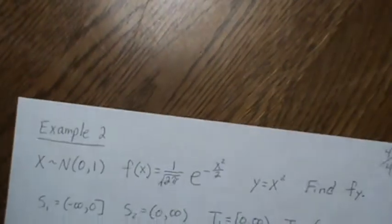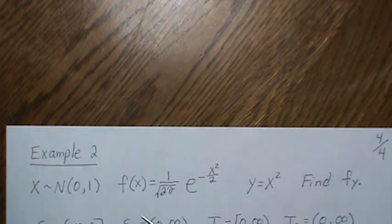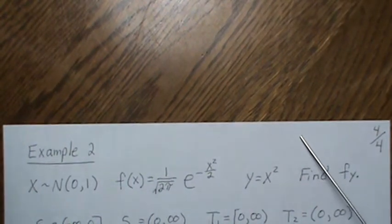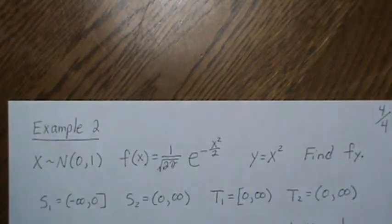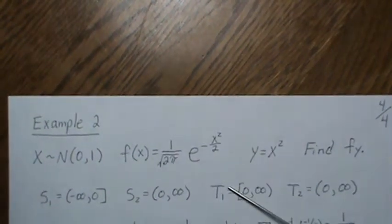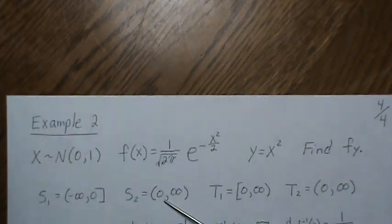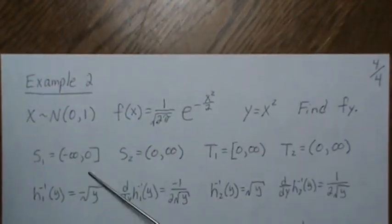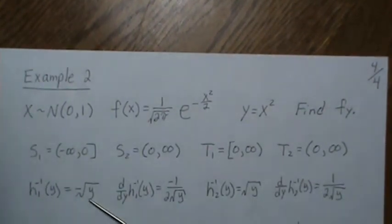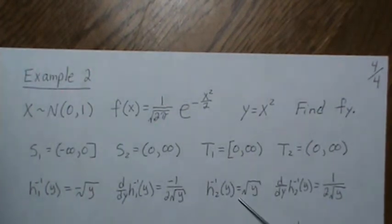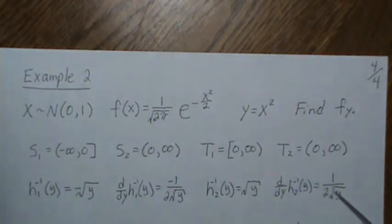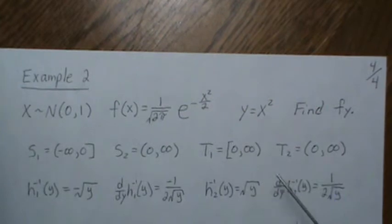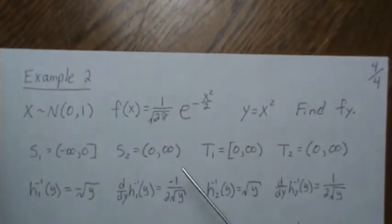Let's do a quick example. Let X be standard normal with its PDF, and let Y = X². We're in the U-shaped case. The regions are S1 = (−∞, 0) and S2 = (0, ∞), and T1 and T2 both become (0, ∞). We pick the partition to make the function one-to-one on each piece, then observe where the T regions land. The inverse function over S1 is minus the square root of Y, with derivative 1/(2√Y); over S2 it is the square root of Y, with derivative 1/(2√Y) as well.